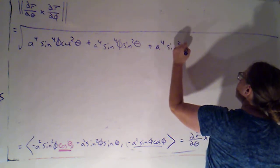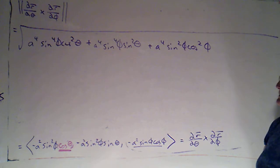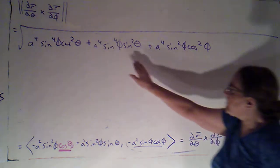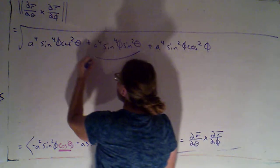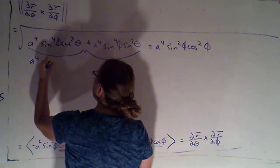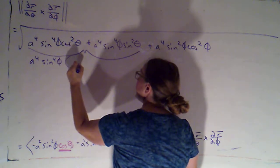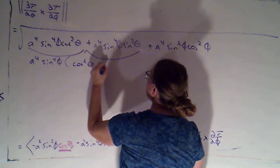Now if I look at these first two terms, they both contain a to the fourth sine to the fourth phi, and that's being multiplied by cosine squared theta plus sine squared theta. But I know that that's just one.